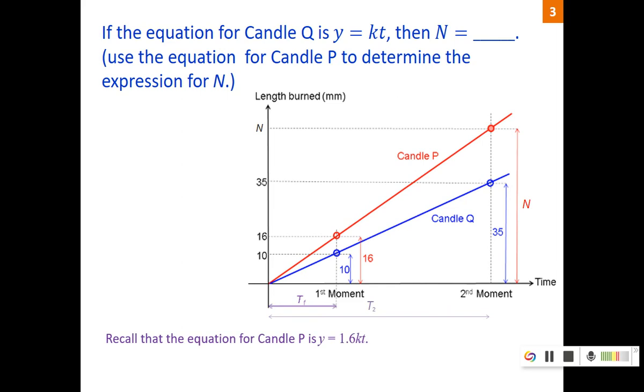Recall the equation for candle P is 1.6kt because the slope of P is 1.6 times the slope of Q. So now if we know that is the equation of the line, all we need is to just plug in the value of this point. The coordinates is t2 comma n. That means when time is t2, the height is n. We plug it into this equation. If we plug in n equals the y value, then n equals 1.6 times kt2. So that is the expression that you should type in.